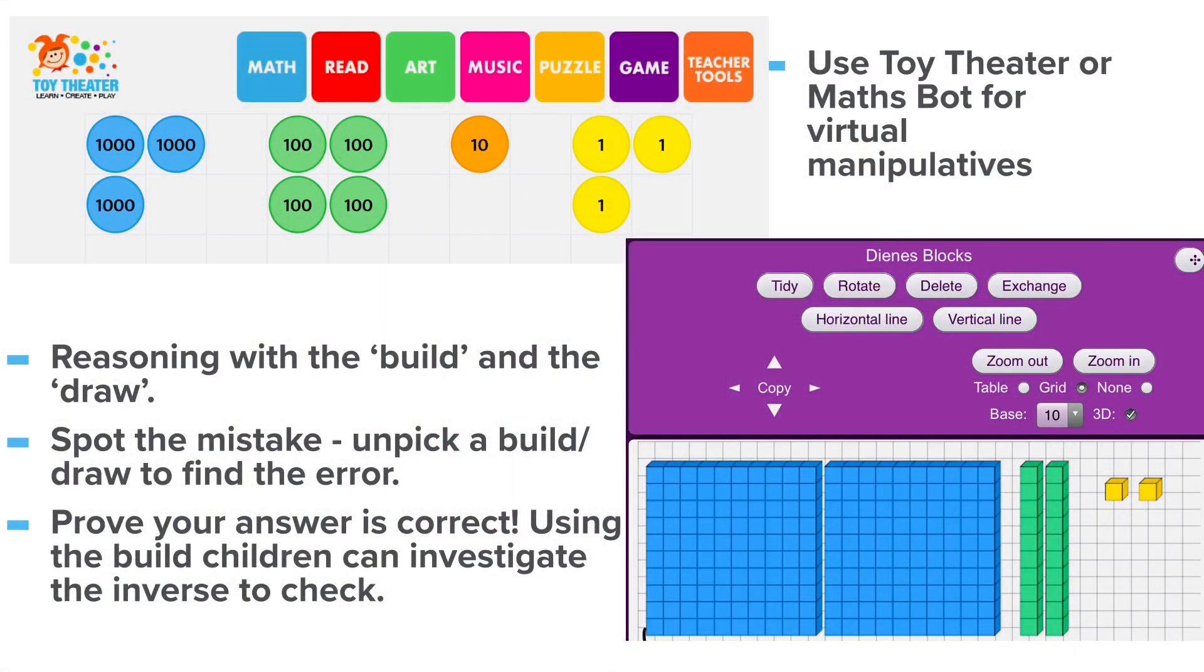If you use the build it draw it write it say it approach you'll find that there's lots of opportunity to do reasoning because what you're providing children with is a visual or something concrete that they can unpick and build their learning on. So you could ask them to spot the mistake by unpicking a build or a draw to find the error and you could also do some work on inverse because you could use the build and the draw to get children to investigate how they could check their answer is correct.